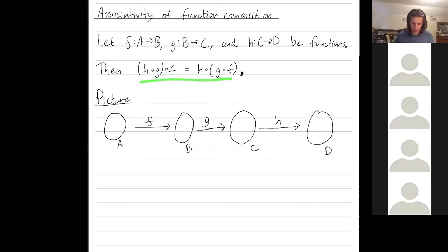But let me explain what this associativity is saying. So let me talk about the left-hand side and then let me talk about the right-hand side. So LHS is for left-hand side, which is h composed with g composed with f. And RHS is for the right-hand side, h composed with g composed with f.